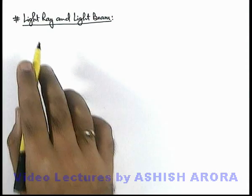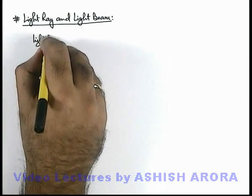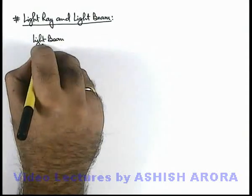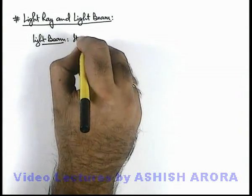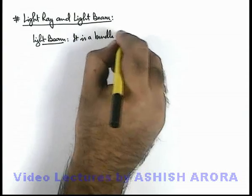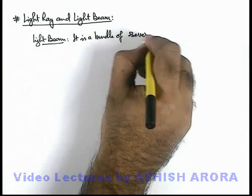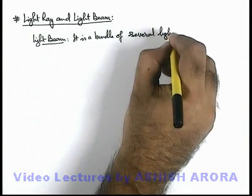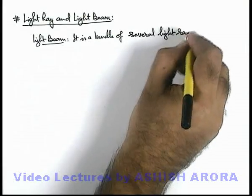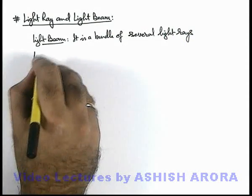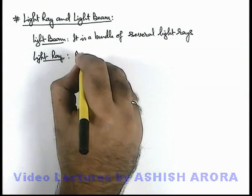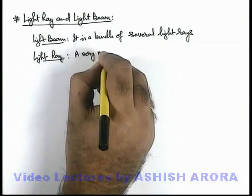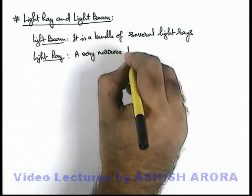Now let us define a light ray and a light beam. A light beam can be defined in terms of a light ray as a bundle of several light rays. And if we define a light ray, it can be defined as a very narrow beam of light.